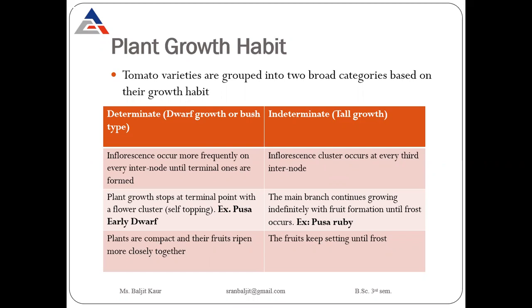In the determinate type of growth habit, the plant growth stops at a terminal point with a flower cluster. At the terminal point there will be a flower cluster and the plant growth will be stopped there — that is known as self-topping. For example, Pusa Early Dwarf. Their height will be less because at the terminal point there will be a flower cluster, and this allows other branches to grow but the main branch will stop its growth.